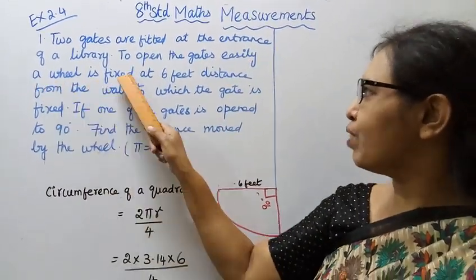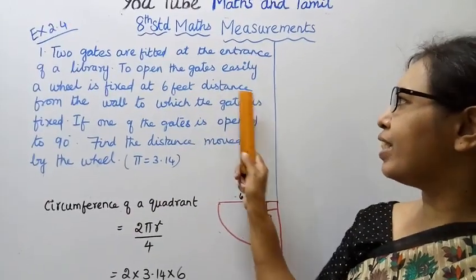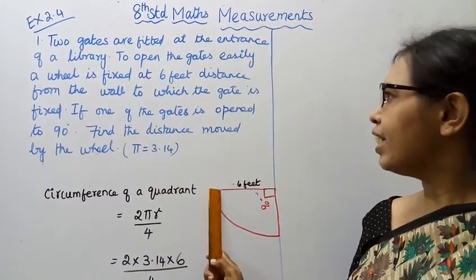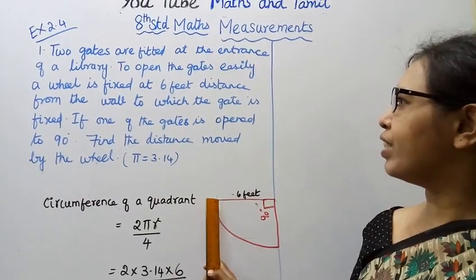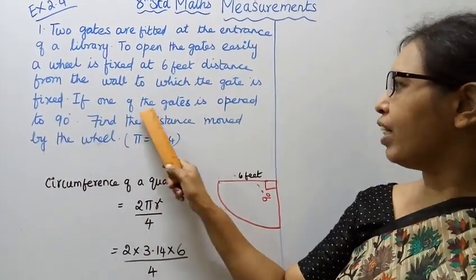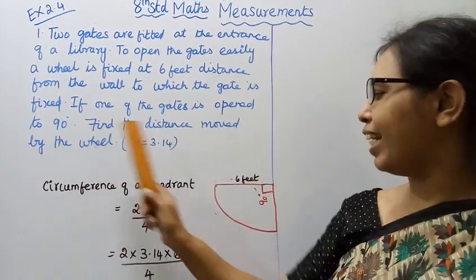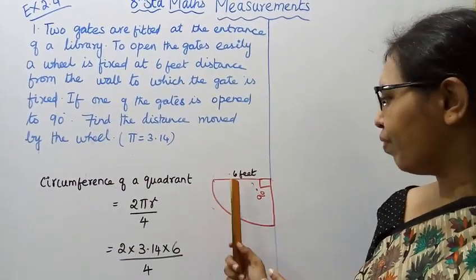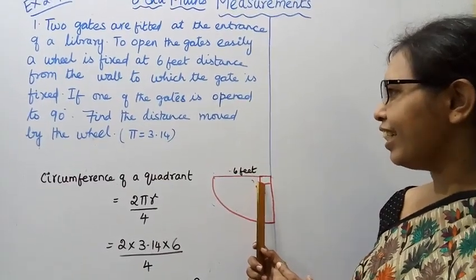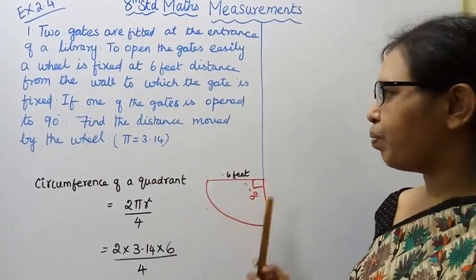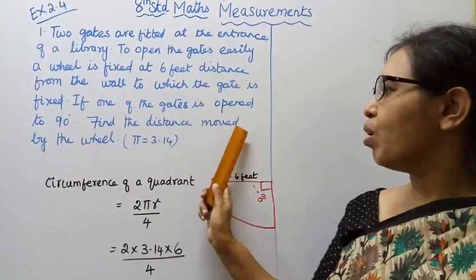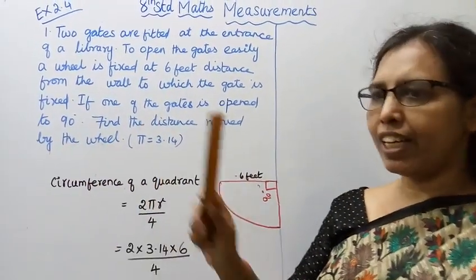To open the gates easily, a wheel is fixed at 6 feet distance from the wall — that is 6 feet distance. If one of the gate is open to 90 degrees, this is 90 degrees. Then this is a quadrant. Find the distance moved by the wheel — this is a quadrant.